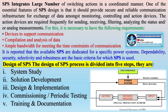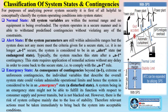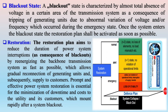In the emergency state, as a consequence of contingencies beyond N-1, extreme or unforeseen contingencies, individual variables describing the overall system state could violate admissible operational limits. A system in an emergency state might not fulfill its function with respect to consumer supply and power transits but is not blacked out; however, there is risk of system collapse mainly due to loss of stability, and relevant actions must be taken immediately. In a blackout state, characterized by almost total absence of voltage in a certain area of the transmission system due to tripping of generating units, the restoration plan shall be activated as soon as possible.